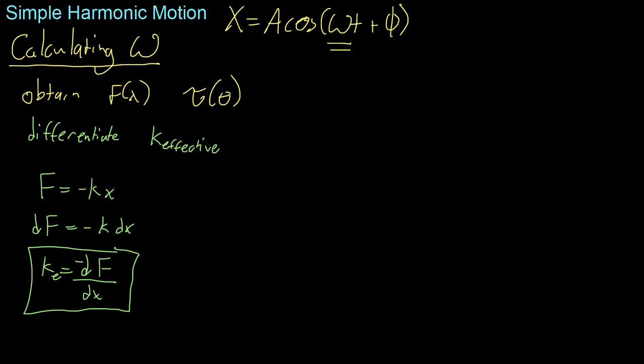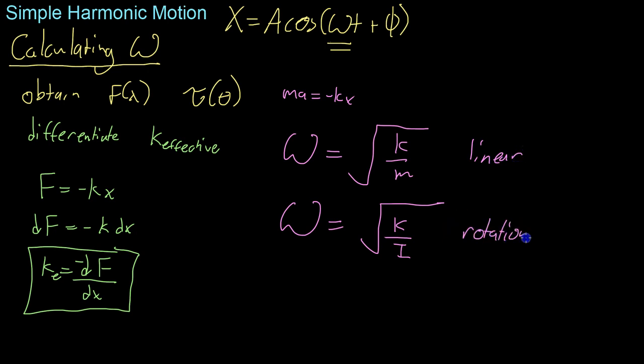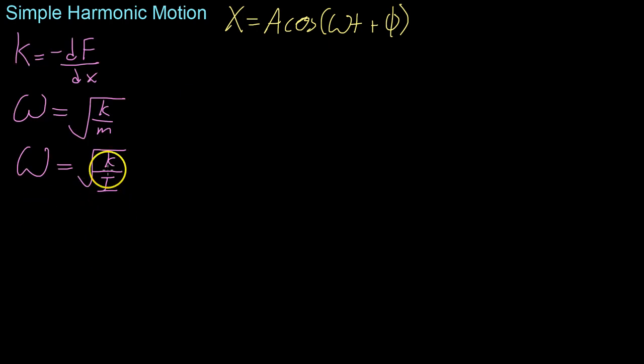And then from here, just based on what we derived earlier with the ma equals negative kx and then we differentiated twice, you plug in this k value into this simple equation for omega. Omega equals k over m or omega equals root k over i, depending on whether or not you're operating linearly or rotationally. And it's important to memorize these equations just because it'll make your thought process for simple harmonic motion problems a lot easier.